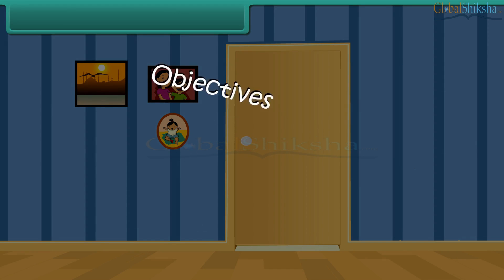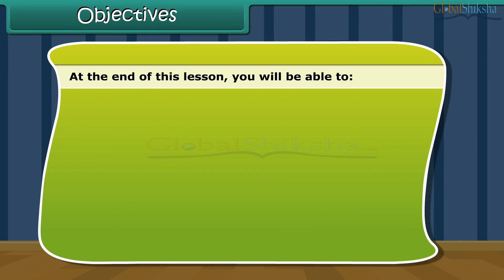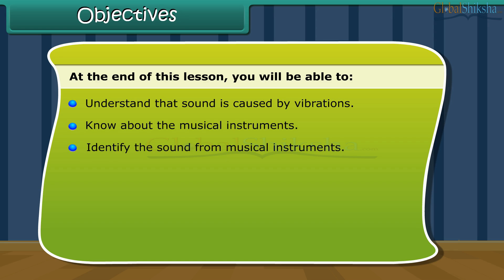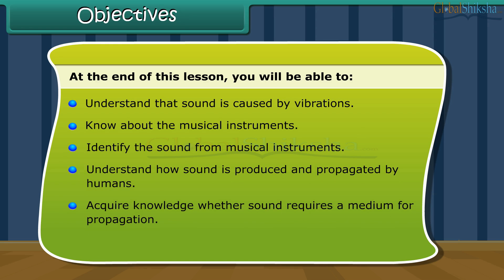Objectives. At the end of this lesson, you'll be able to understand that sound is caused by vibrations, know about the musical instruments, identify the sound from musical instruments, understand how sound is produced and propagated by humans, and acquire knowledge where the sound requires a medium for propagation.